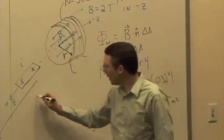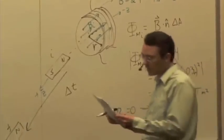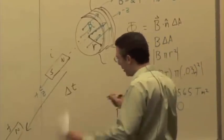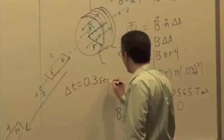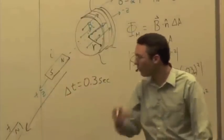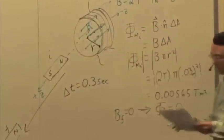And let's say I do this in a short amount of time. Let's say it takes me 0.3 seconds. So 3 tenths of a second to move it from this position to very far away where the magnetic field in here is now zero.